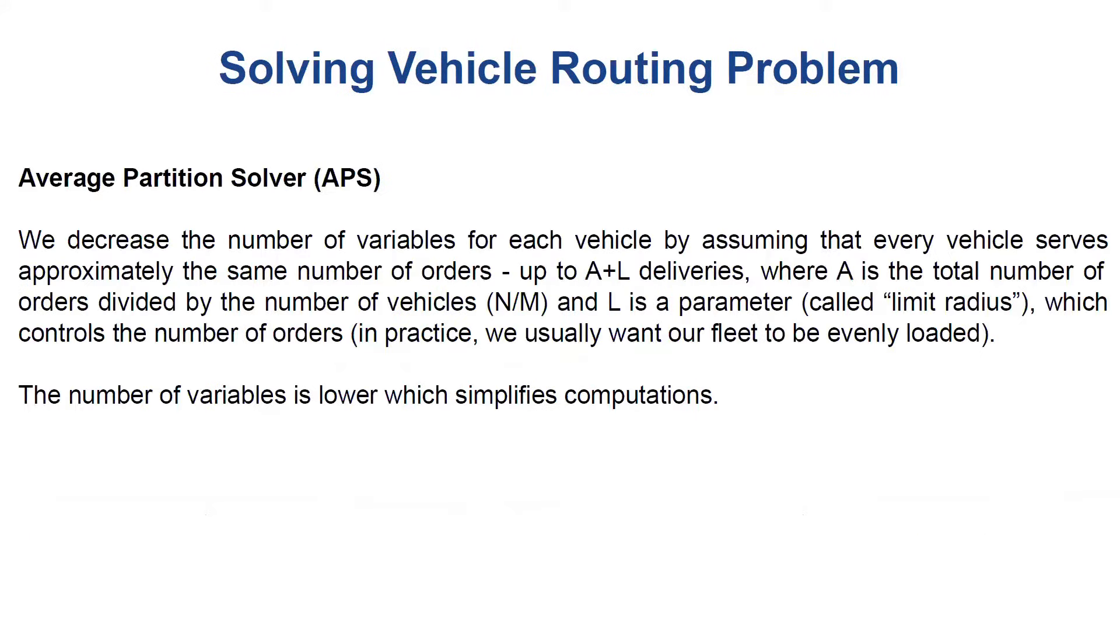Later, we improved it and we developed the next approach, which is called the average partition solver. We decreased the number of variables for each vehicle by assuming that every vehicle serves approximately the same number of orders, up to A plus L deliveries, where A is the total number of orders divided by the number of vehicles, so it's N divided by M, and L is a parameter called limit radius.